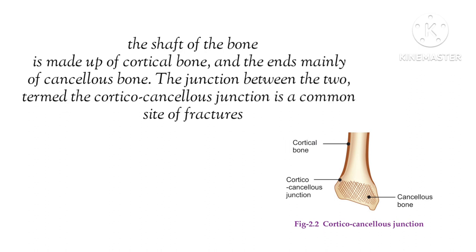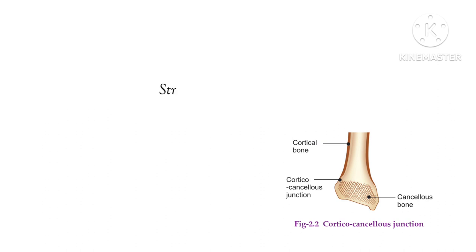The shaft of the bone is made up of cortical bone, while the ends are cancellous bone. The junction between these two — the cortical-cancellous junction — is a common site of fracture. The ends are spongy because they are weight-bearing and need to absorb shock.